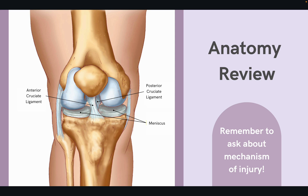The anterior and posterior cruciate ligaments, the ACL and PCL, connect the femur and tibia, while the medial and lateral meniscus both help in stabilizing the knee and lubricating the joint. The knee is very susceptible to injury, whether while playing sports or from some other activity. Asking about the mechanism of injury — understanding the motion of the body when the injury occurred — is super helpful to determining the underlying injury.